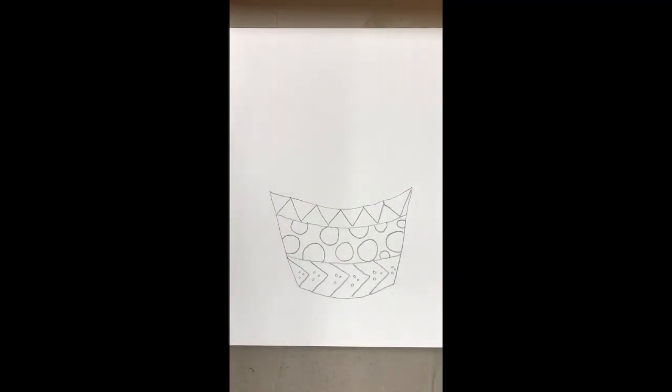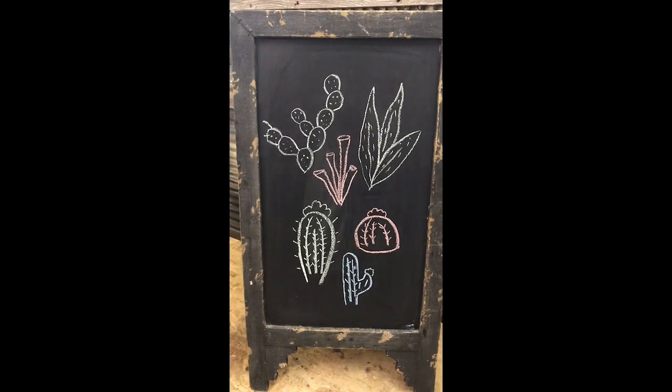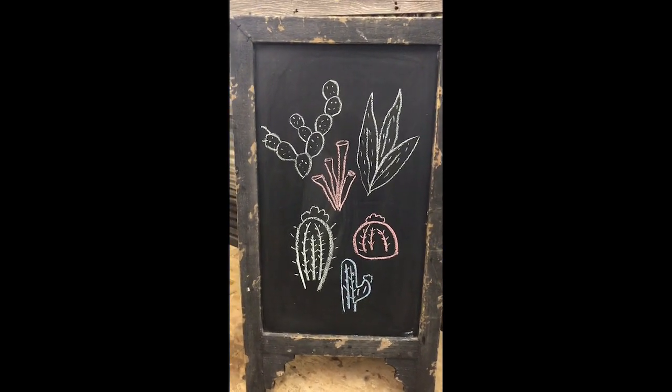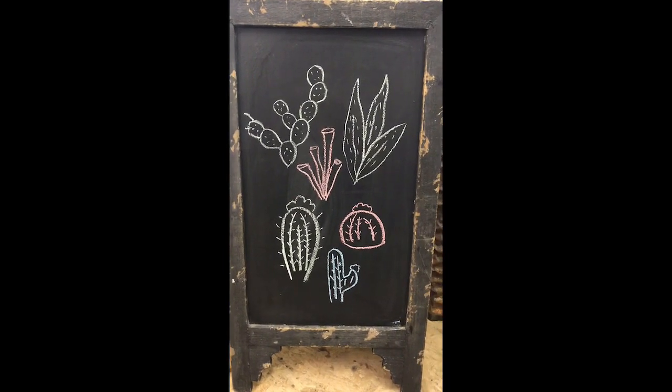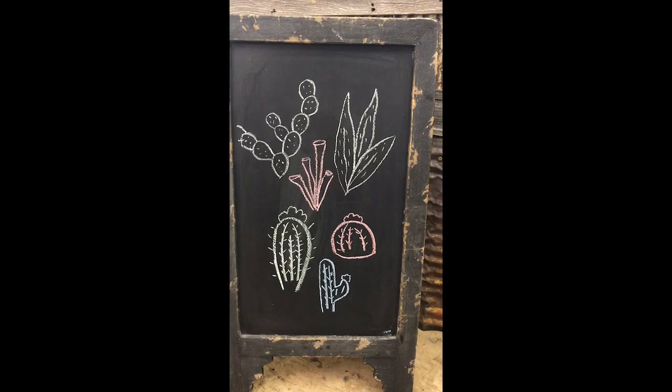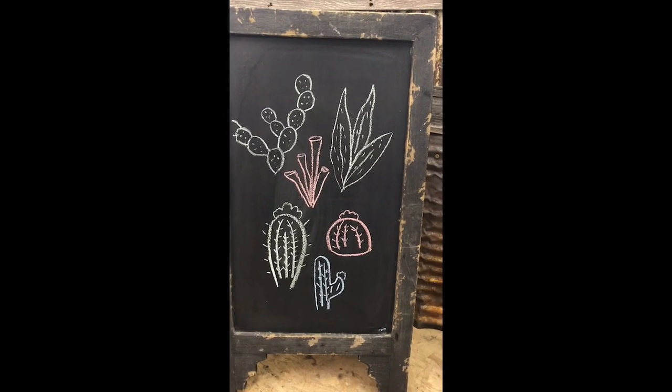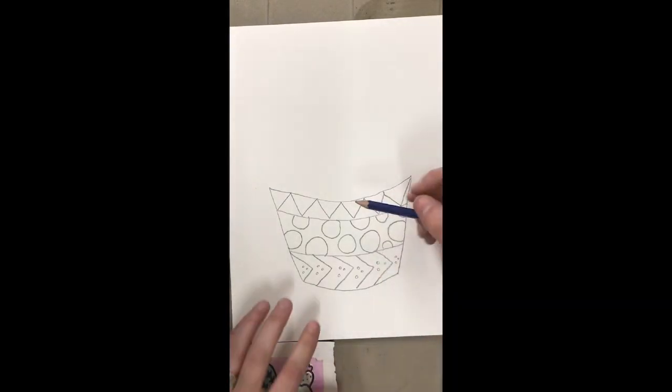All right, now I am going to start drawing some of my succulents. I'm going to show you some examples real fast. These are a few examples of some succulents that you could add in your pot if you wanted to have some more variety. You can get on Google or have your parents help you and you can type in succulent clip art or cactus clip art and you can probably get some more ideas.